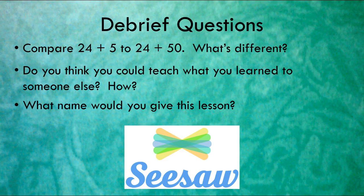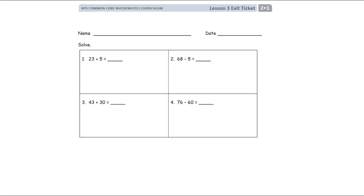Now, let's do our debriefing questions. These debriefing questions you're going to seesaw to your teacher. So you're going to make a short video and answer these questions. Your first question is, compare 24 plus 5 to 24 plus 50. What's different? Then you need to tell me, do you think you could teach what you learned to someone else? And how would you teach that? Do you think you could teach this to the first graders coming into second grade next year? Your next question is, what name would you give this lesson? After you're done with your short video, seesaw that to your teacher.